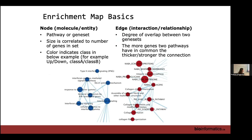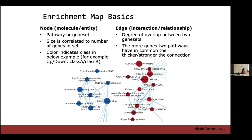What we're going to do now is create an enrichment map. An enrichment map is a network where each node is a pathway and the connection between nodes represents the number of genes that two pathways have in common. The size of that node can reflect the size of that pathway, and the color indicates the direction and strength of its association with the phenotype. For example, blue for immunoreactive and red for mesenchymal in our ovarian cancer analysis.